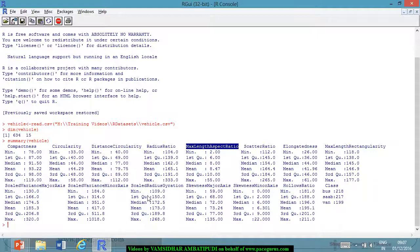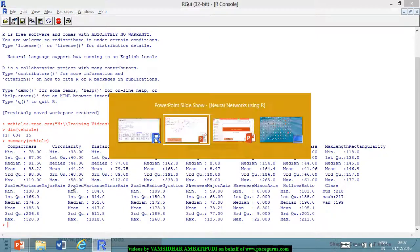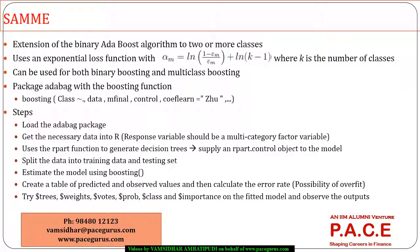The objective is to see what level of accuracy we can achieve in predicting the class of the vehicle given the values of all these different attributes. Now let us look at the algorithm. The SAMe algorithm is basically extending the binary AdaBoost algorithm so that it can cater to two or more classes. It still uses the exponential loss function, just like AdaBoost M1.